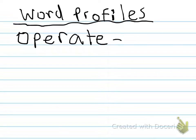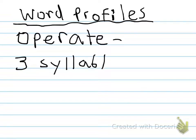So if we look at 'operate,' the first thing I like to do is syllables. Operate — three syllables, so I just write that below. Three syllables. How many vowels are there? Well, I see an O, an E, an A, and an E — one, two, three, four. Four vowels.